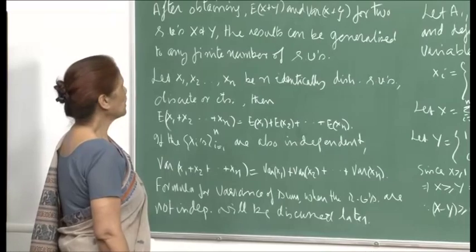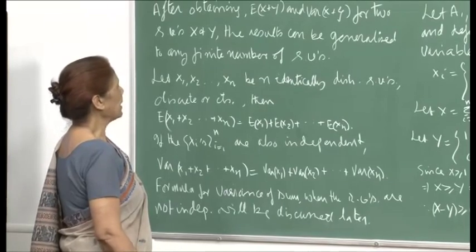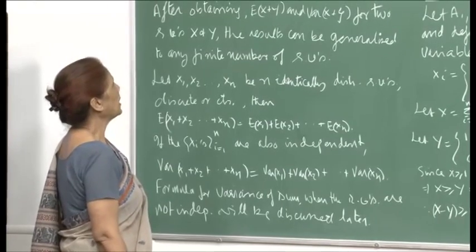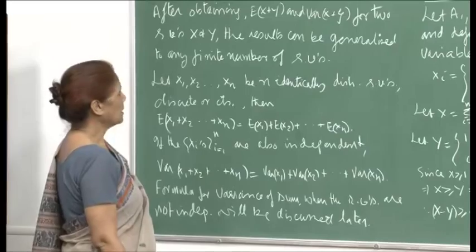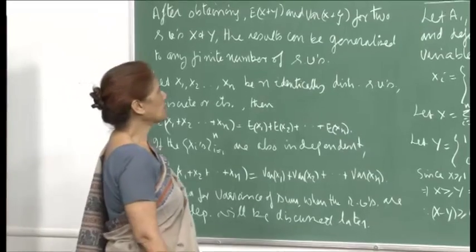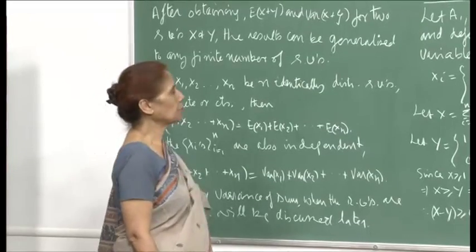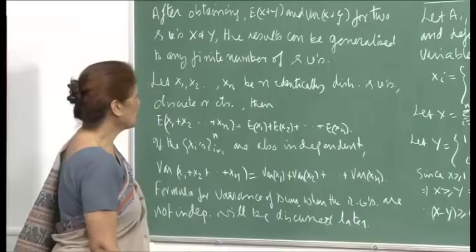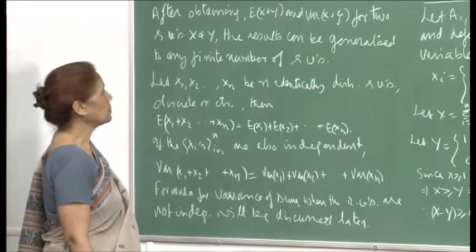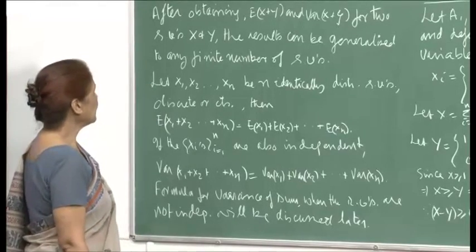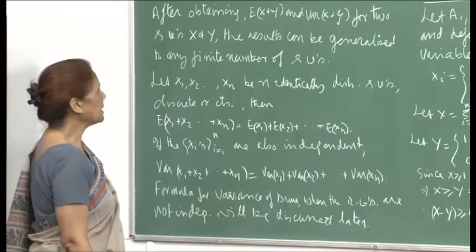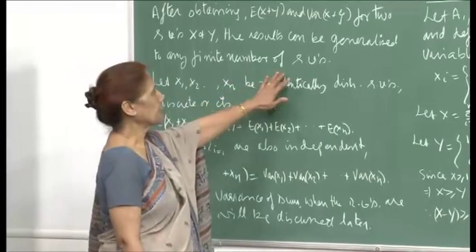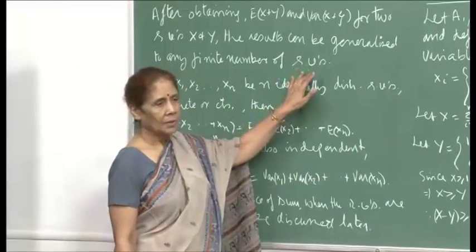After obtaining the expression for E(X+Y), we showed that E(X+Y) = E(X) + E(Y). And under independence of X and Y, we showed that Var(X+Y) = Var(X) + Var(Y). We can generalize these results for any finite number of random variables.